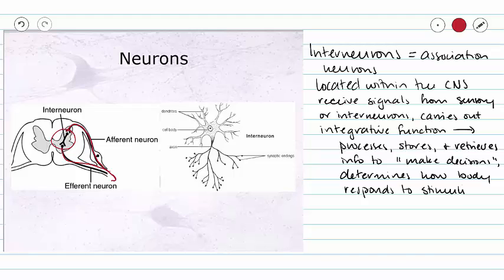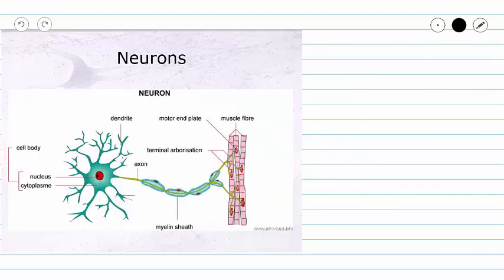You can see our interneurons have lots of dendrites coming into the cell body. That cell body makes decisions, and then we send lots of different command information out of our axons. Our interneurons are very highly connected within our central nervous system so they can receive information from many different places and then disseminate information to many different places. They are very important to the function of our nervous system.